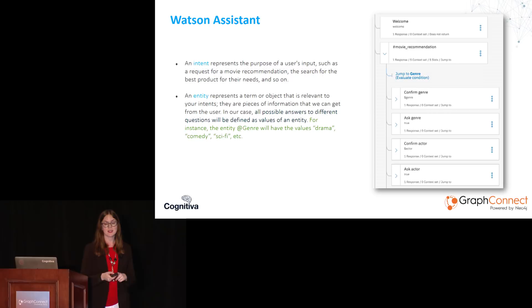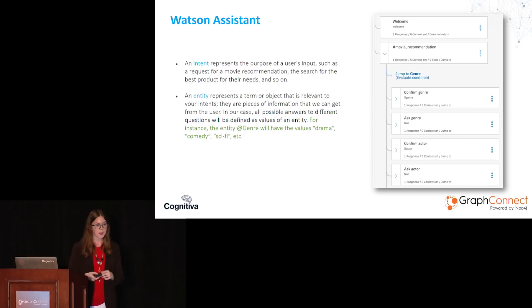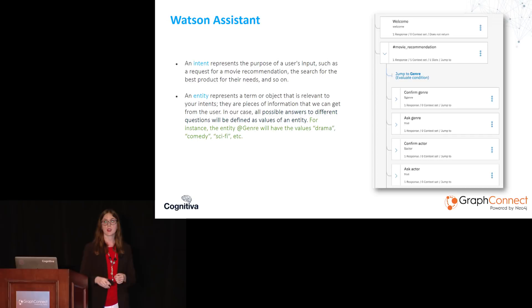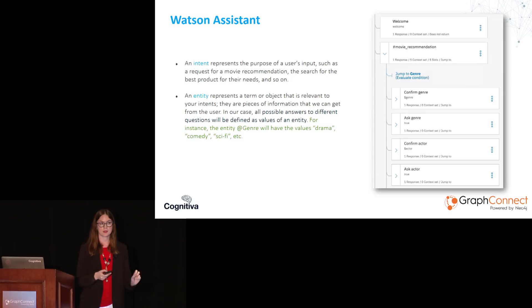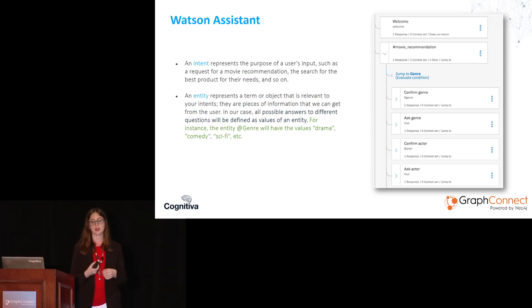Watson Assistant works with intents and entities. An intent represents the purpose of a user's input — such as a request for a movie recommendation or for the best product for their needs. An entity represents a term or object that is relevant to your intents; these are pieces of information that we can obtain from the user. In our case, we define all possible answers to the different questions as values of an entity. For example, if we consider the entity 'genre' in a movie recommendation, we would have values like drama, sci-fi, comedy, romance, etc.